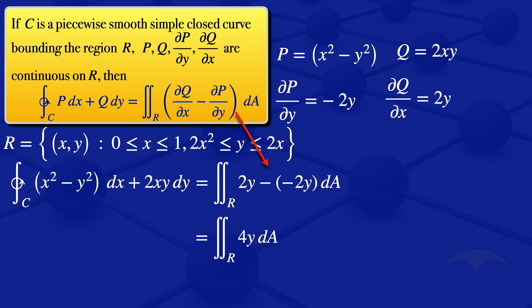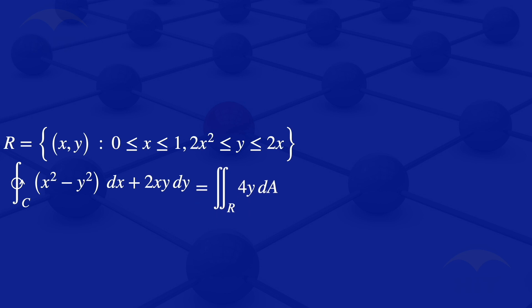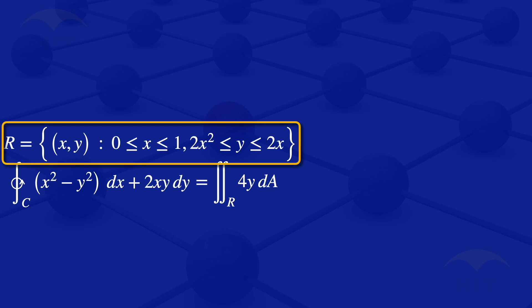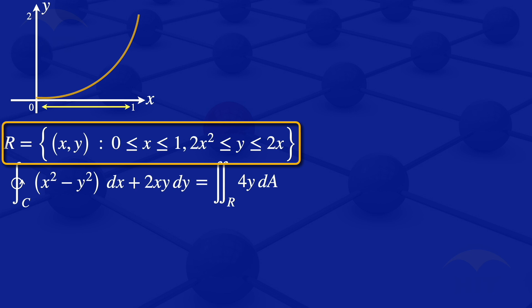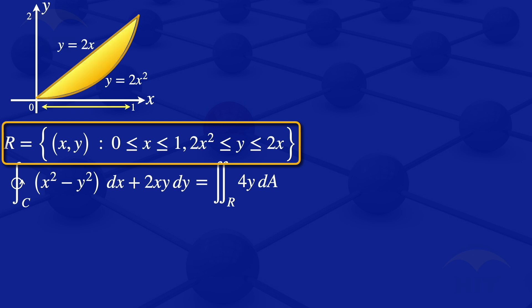So we have the double integral over the region R of 4y dA. Now I'll look at the region we are given. The region has points x, y such that x varies from 0 to 1. I'll draw the x-axis, label it x, and mark the points 0 and 1. Then I'll draw the y-axis, label it y, and mark the point 2. We are saying y varies from 2x squared — I'll plot the graph of y equals 2x squared — up to 2x, and I'll also plot the line y equals 2x.